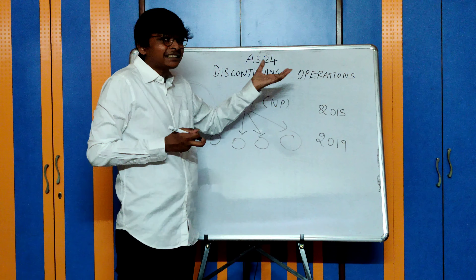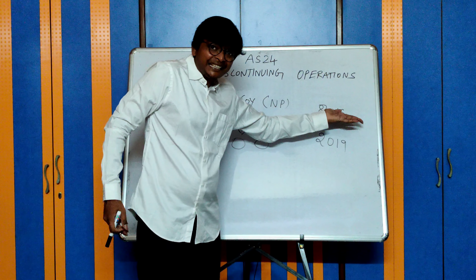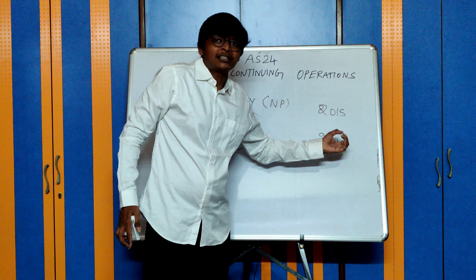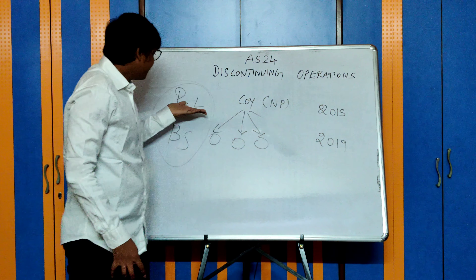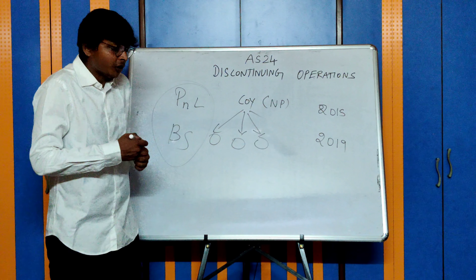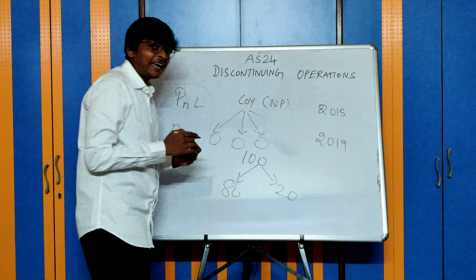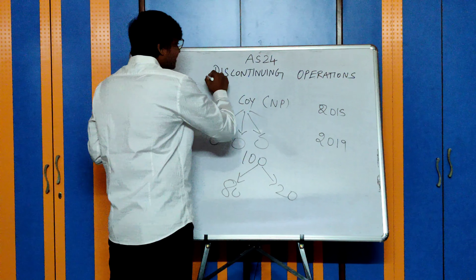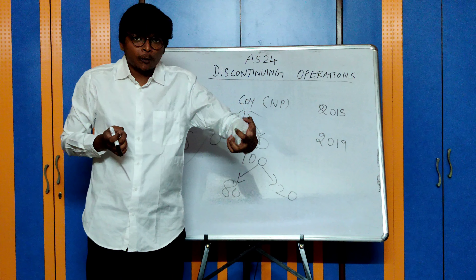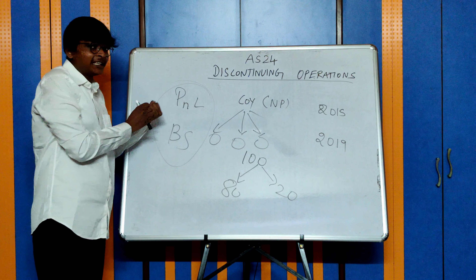For a discontinuing operation, suddenly one year your profit will drop because one business is going to be sold — which you decided in 2015, but execution is happening only in 2019 or 2020. So what the standard is telling is: prepare your P&L and balance sheet as it is, but also give an additional disclosure saying out of the total profit of 100, 80 I will be getting in the future. The day somebody buys this business, this 20 profit I will no more get.